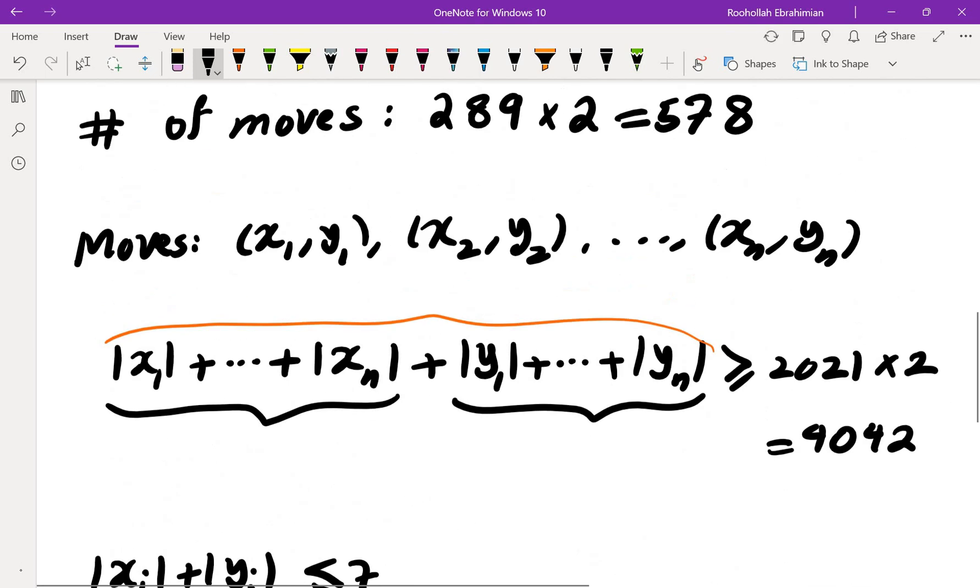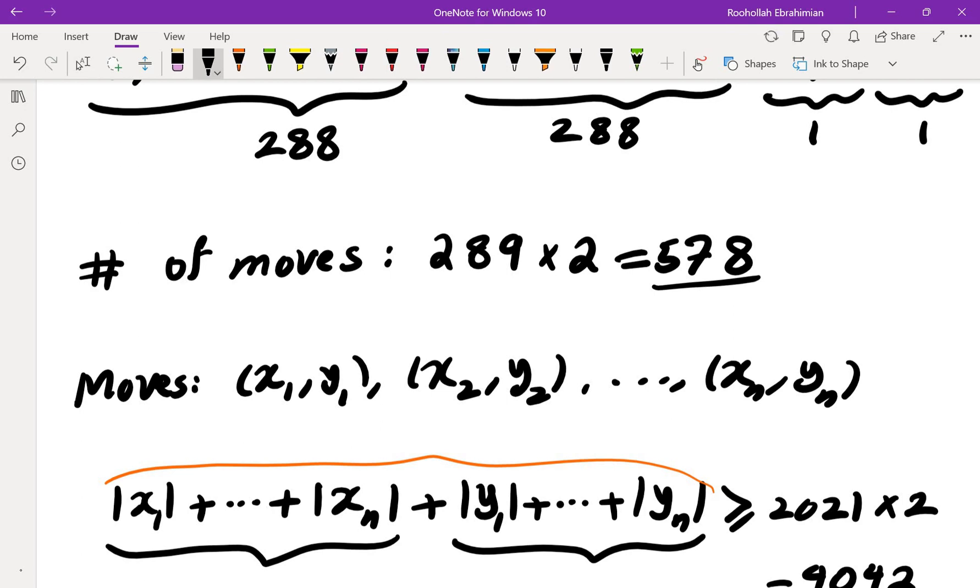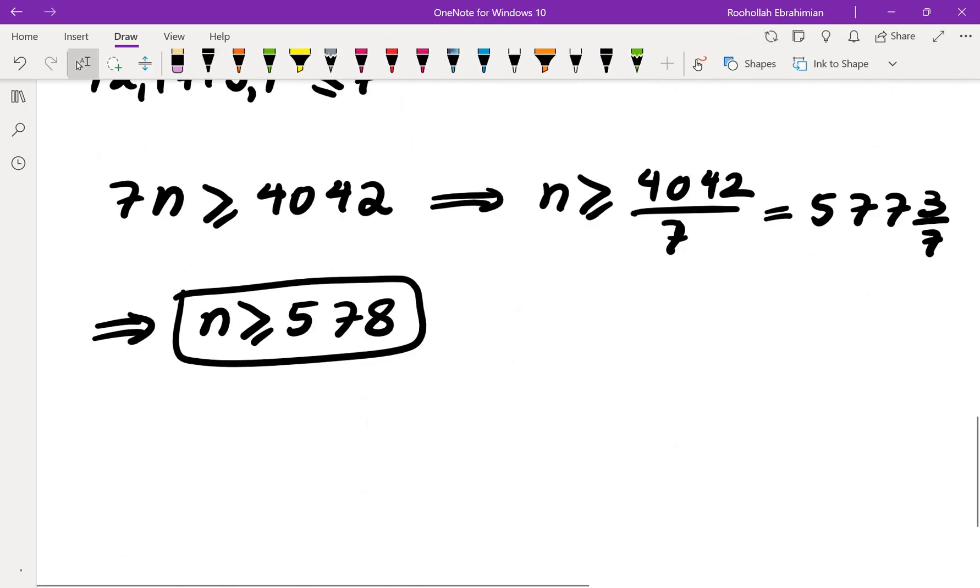Because n is an integer, n is at least 578. So we were able to achieve 578, and we cannot get anything less than 578. So the answer is in fact 578. If you like this video, make sure to subscribe to the channel and check out the rest of the videos on my channel.